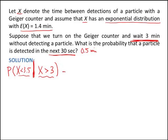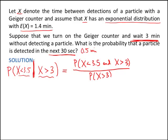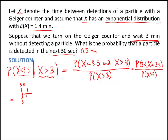We've learned how to compute conditional probabilities. This is the probability of X less than 3.5 and X greater than 3, divided by the probability that X is greater than 3. So this is the probability that X is between 3 and 3.5, divided by the probability of X being greater than 3. The numerator is the integral from 3 to 3.5 of 1 over 1.4 times e to the negative 1 over 1.4 times x dx, and the denominator is the integral from 3 to infinity of the same density.